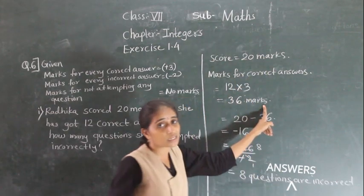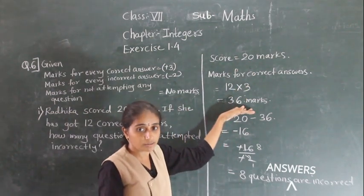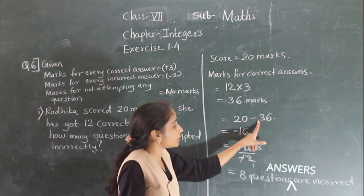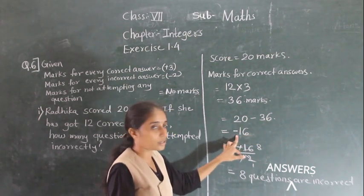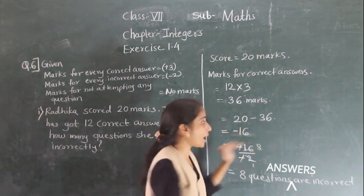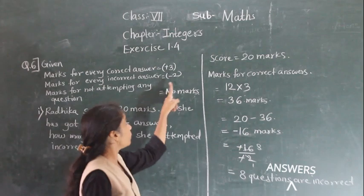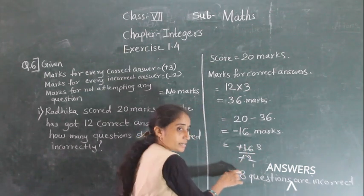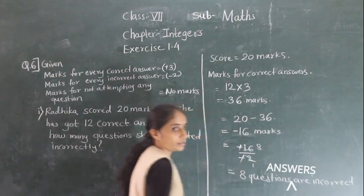Since her score is 20 but correct answers gave 36, she must have got some wrong. Incorrect marks = 20 minus 36 = minus 16. These are incorrect marks. Each incorrect question gives minus 2 marks, so: minus 16 divided by minus 2 — minus minus cancels to plus — 16 divided by 2 equals 8. So 8 questions are incorrect.